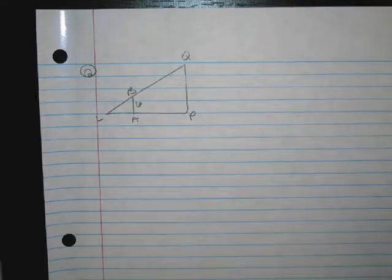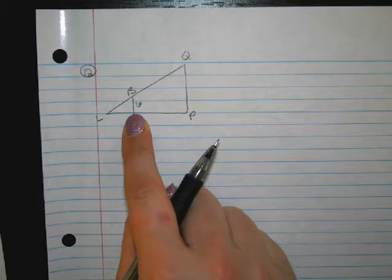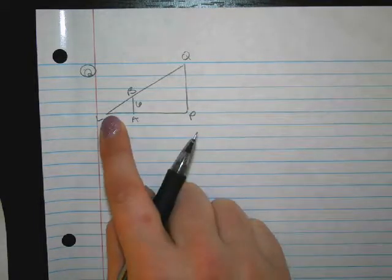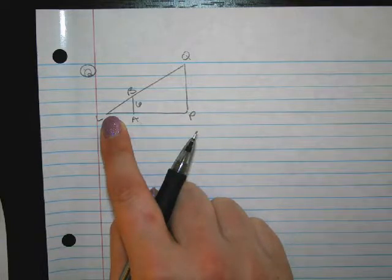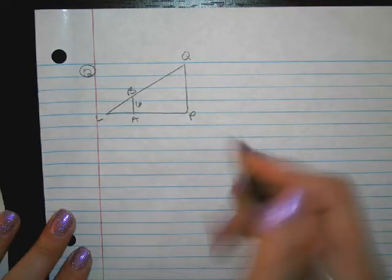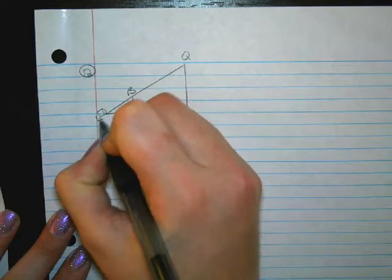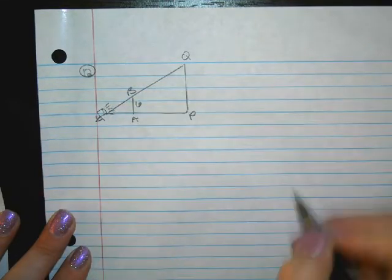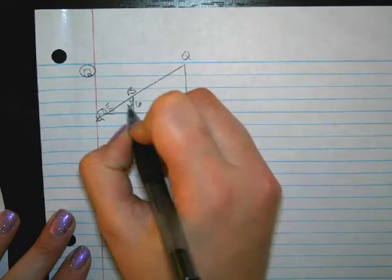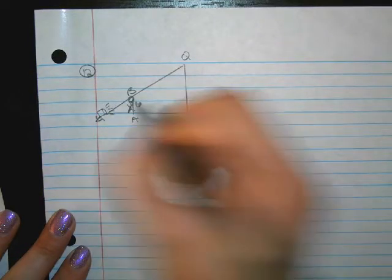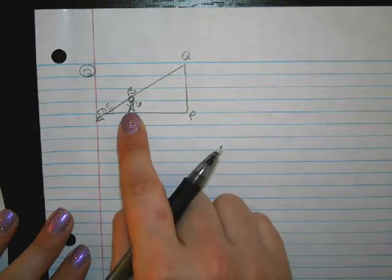Okay, so number 12 says a man who is six feet tall is walking away from a spotlight. Here's the spotlight. I think labeling the spotlight as L is very strange, or L for light I guess. Okay, I guess that's good. I'm gonna make my spotlight look like... I don't know why I'm having a hard time saying that.